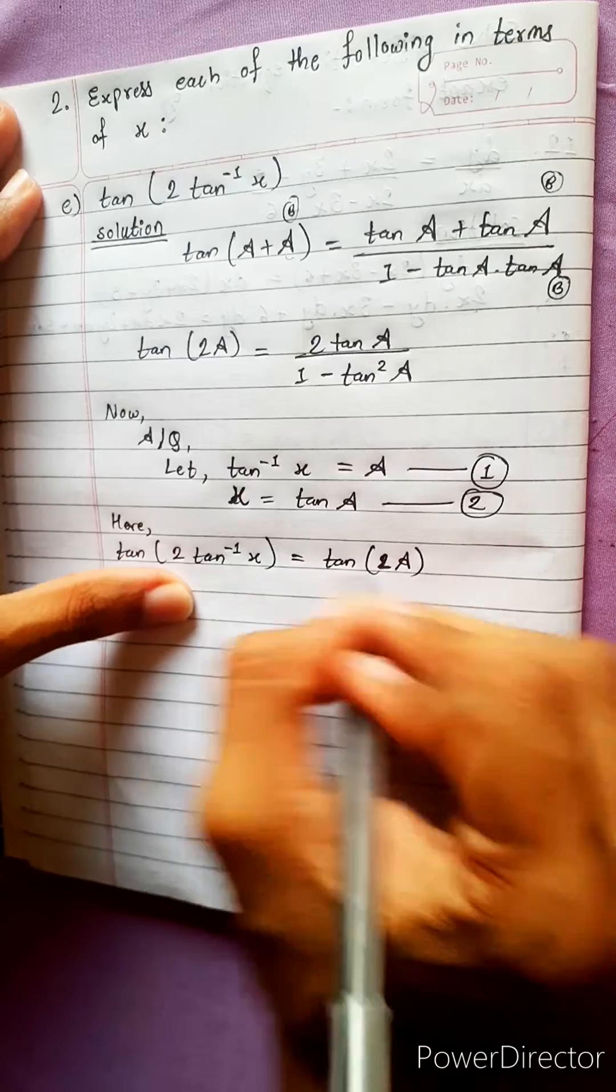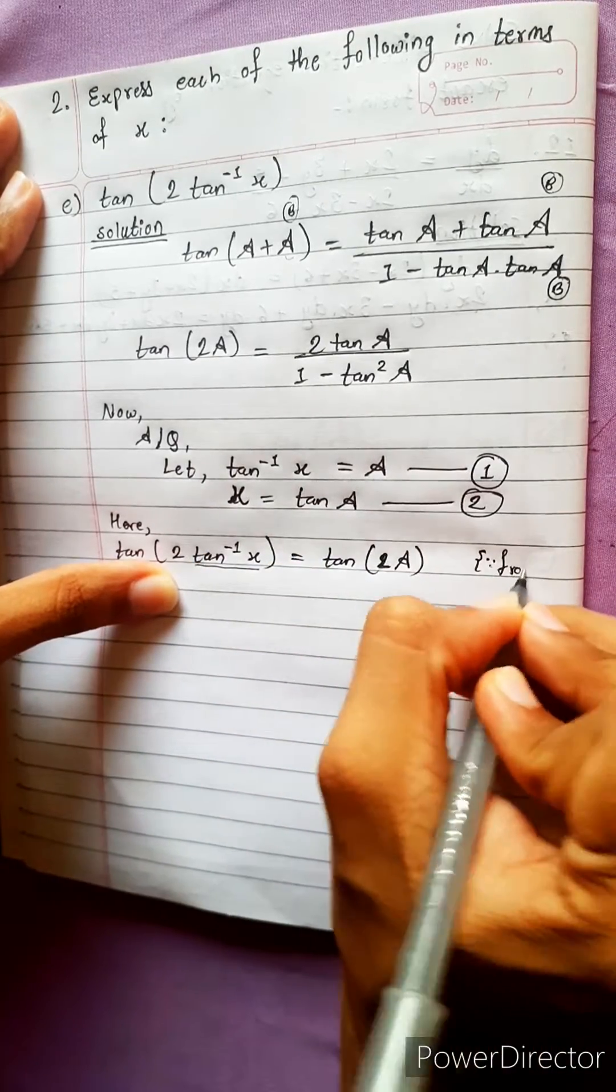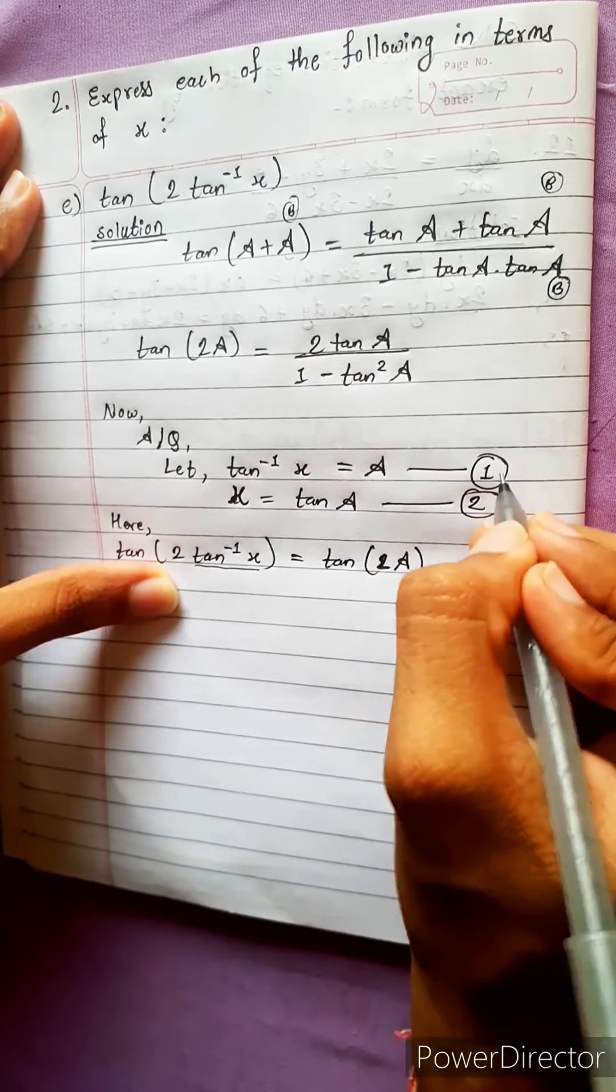How we write here tan 2A? This is our A. We wrote from equation 1. So, we need this, very important.